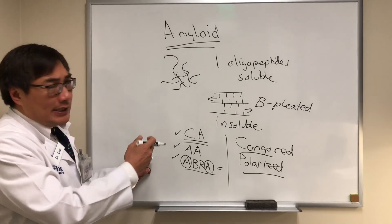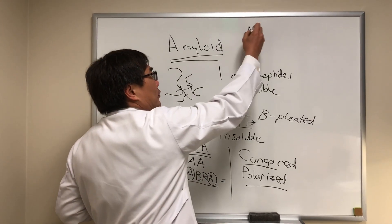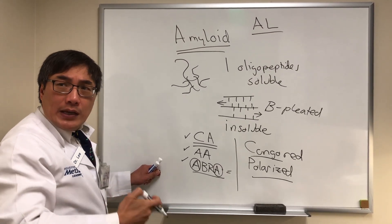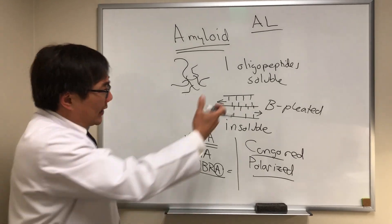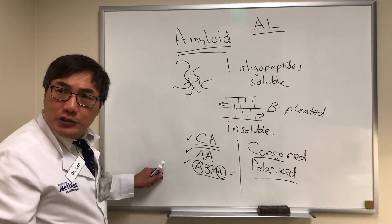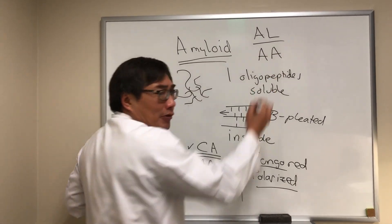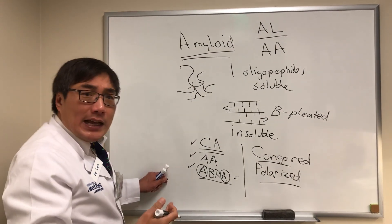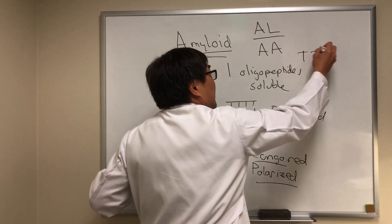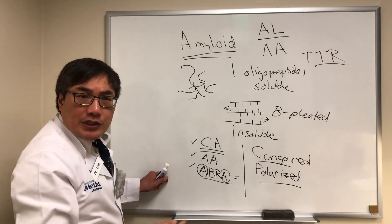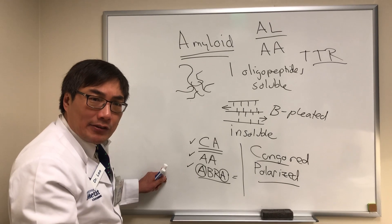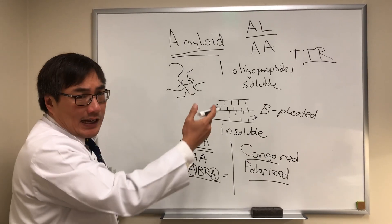The amyloid proteins we have to worry about can arise from light chain production — amyloid light chain, or AL. If you have light chain overproduction, those form the basis of the oligopeptides that become the beta-pleated insoluble sheet. You can also have amyloid protein AA, or genetic problems in the transthyretin that can lead to predisposition and production of the protein that leads to the final common pathway — the production of extracellular amorphous amyloid. These are less common.